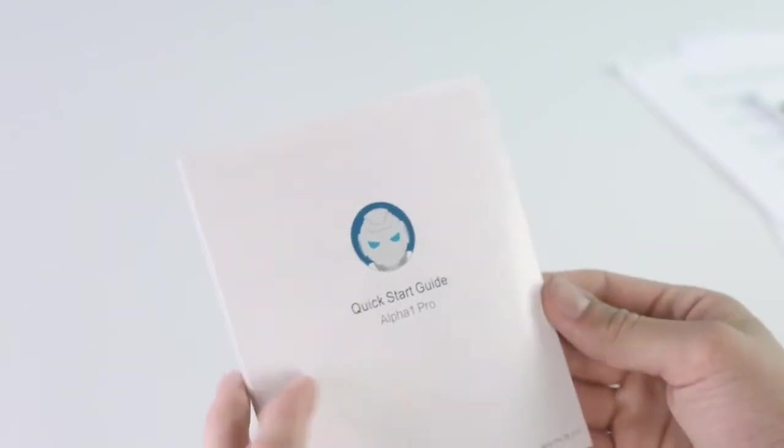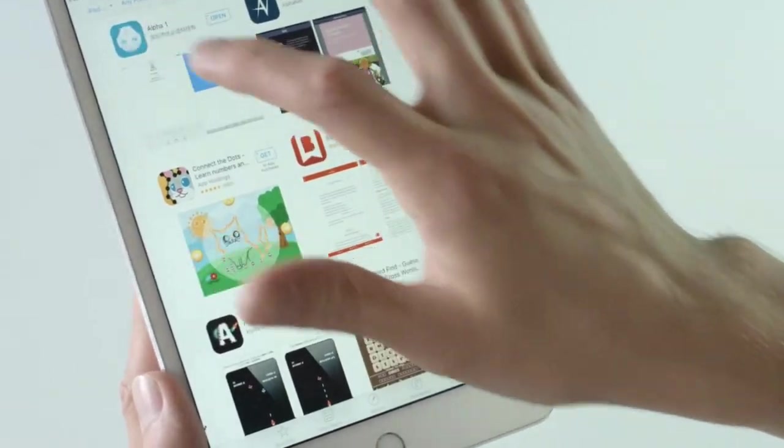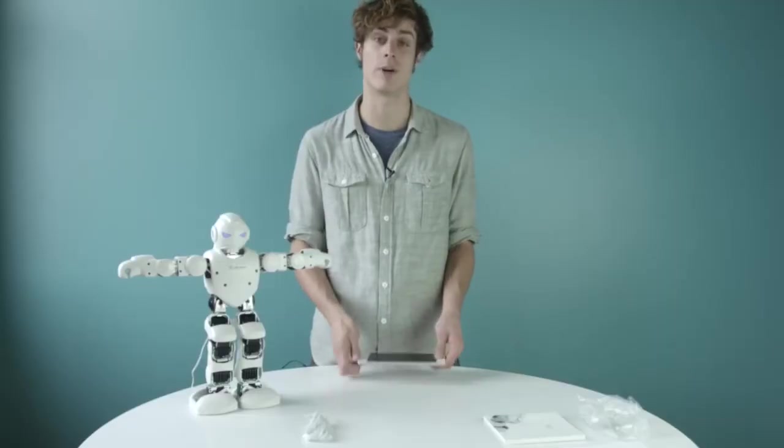While he's charging, scan the QR code in the user manual or search Alpha One in the Apple App Store or the Google Play Store and download it to your smartphone or tablet.